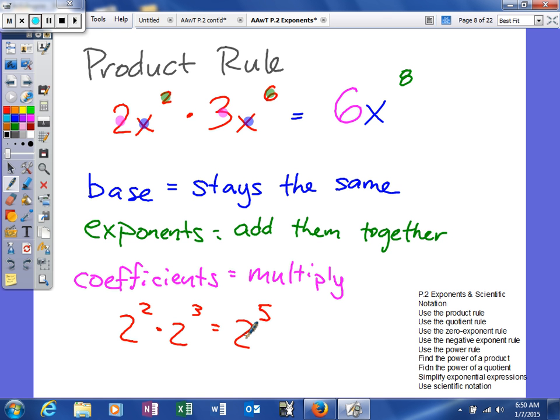Remember, the base does stay the same. And on a problem like this, I really wouldn't expect you to give me that answer. I would expect you to actually work it out. So you could have done two squared is four, and then two to the third is eight, and then multiply those two together to give us 32, or gotten two to the fifth and found it to be 32.